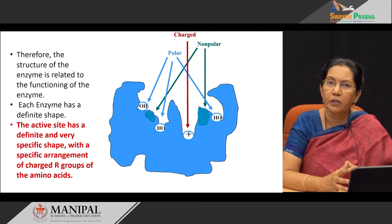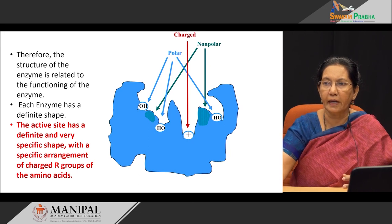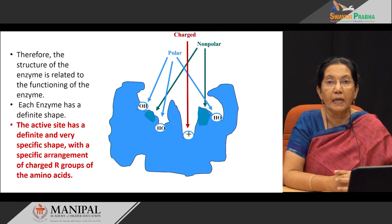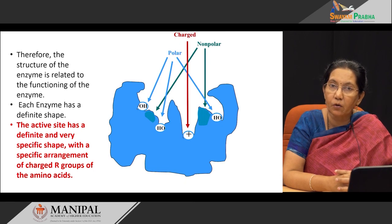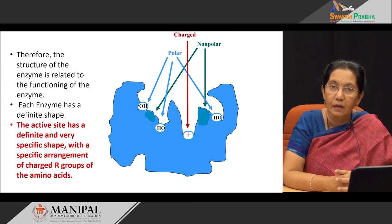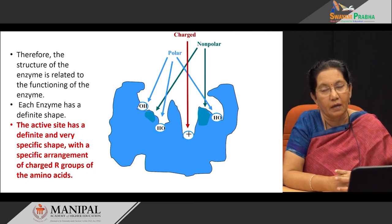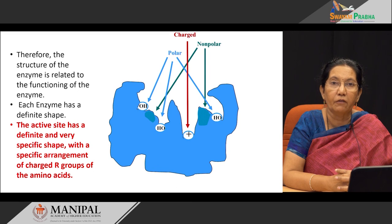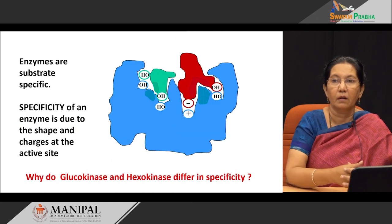It is also important to realize that there are several charges in the active site. These charges may be positive or negative. Where do these charges come from? They come from the R groups of the various amino acids which make up its primary structure. So, we have an active site on an enzyme which has a definite shape and definite charges. This happens because the protein has folded in a very specific tertiary conformation.